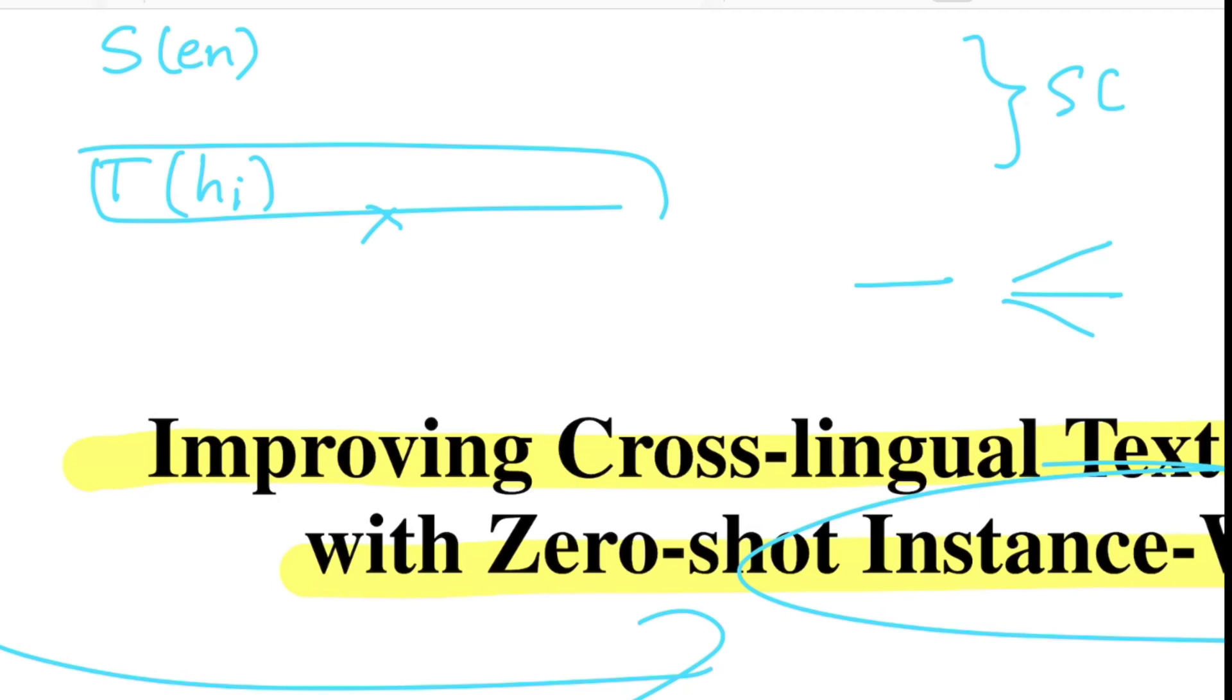But what we do have is many English sentences and also their ground truth label data. So now the question is, can we train a model on English language and then use it for predicting the sentences for Hindi language as well? This is the entire problem that we are trying to solve.